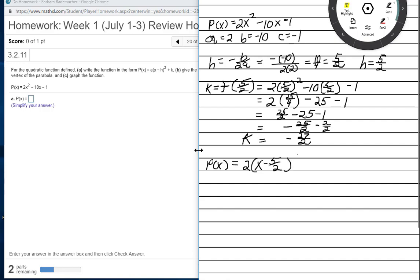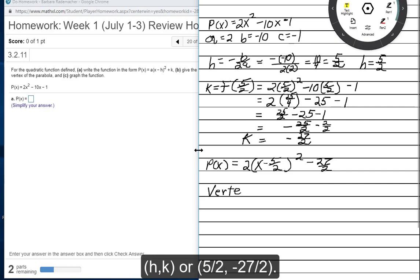Here's P of X in vertex form. We're also asked to state what the vertex is. The vertex is HK, or 5 over 2, negative 27 over 2.